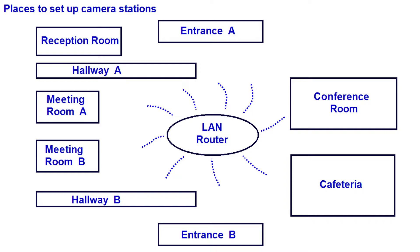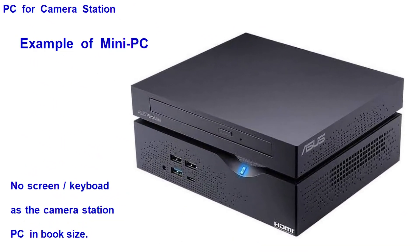You can also use the same PC for the camera station and the play out station. In each camera station, a number of webcams are connected to the station PC and focus on certain targets. For a permanent setup, each webcam is mounted on the wall or ceiling. The PC of the camera station does not need a screen or keyboard — it can be a mini PC in a small box, placed on a table, mounted on the wall, or placed above the ceiling.